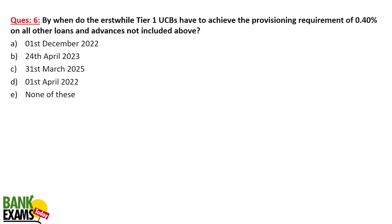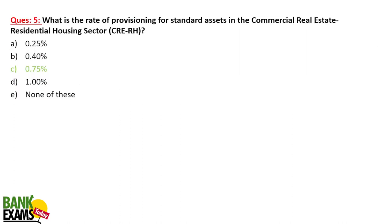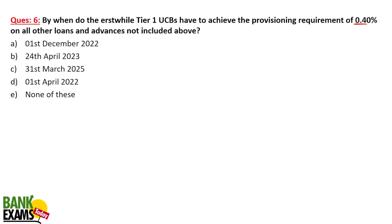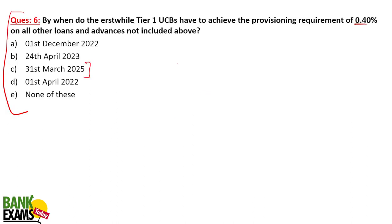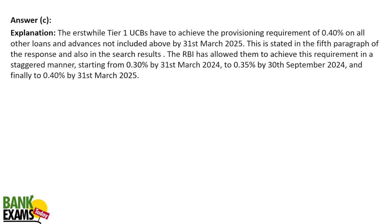By when do Tier 1 Urban Cooperative Banks have to achieve the provisioning requirement of 0.4% on all other loans and advances not included above? The deadline is 31st of March 2025. All the provisioning requirements discussed must be met by Urban Cooperative Banks by 31st March 2025.